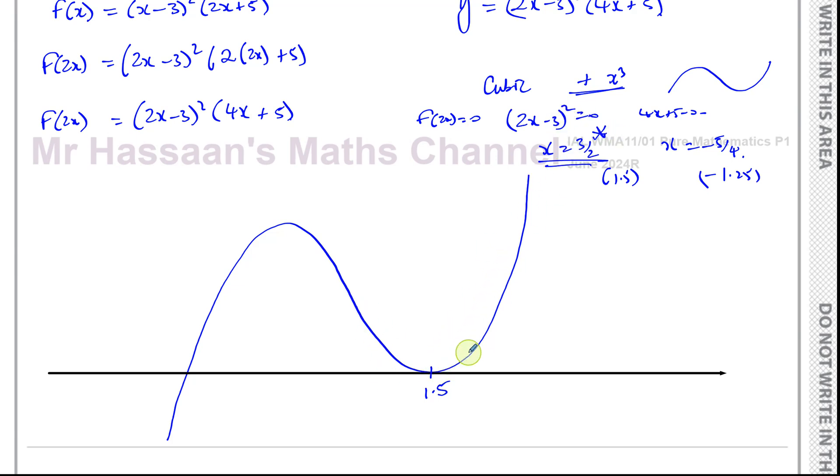Because you have a repeated root at that section. Whenever you have this repeated root, the graph turns on the X-axis. The other place where it cuts the X-axis is going to be here, minus 1.25. In this case, you have a single root, so it cuts through the X-axis at that point.